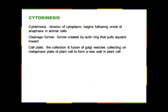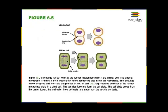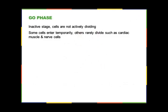Cytokinesis, the division of the cytoplasm, begins following the onset of anaphase. In animal cells, the cleavage furrow is created by an actin ring that pulls the equator inward — similar to a drawstring at the waist of pants that pinches inward as you tighten it. The cell plate in plant cells is a collection and fusion of Golgi vesicles that collect at the metaphase plate, forming a new wall. You simply can't pinch off a plant cell wall because it's too rigid.